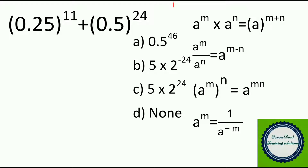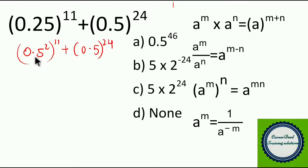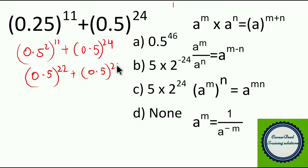Next question: 0.25^11 + 0.5^24. This seems a little challenging and has 4 options. Write 0.25 as 0.5², so: (0.5²)^11 + 0.5^24 = 0.5^22 + 0.5^24. Now, most candidates at this step will make a mistake — thinking it is a^m + a^n = a^(m+n), writing 0.5^46. If you choose that option, your answer is wrong. There is no such formula.